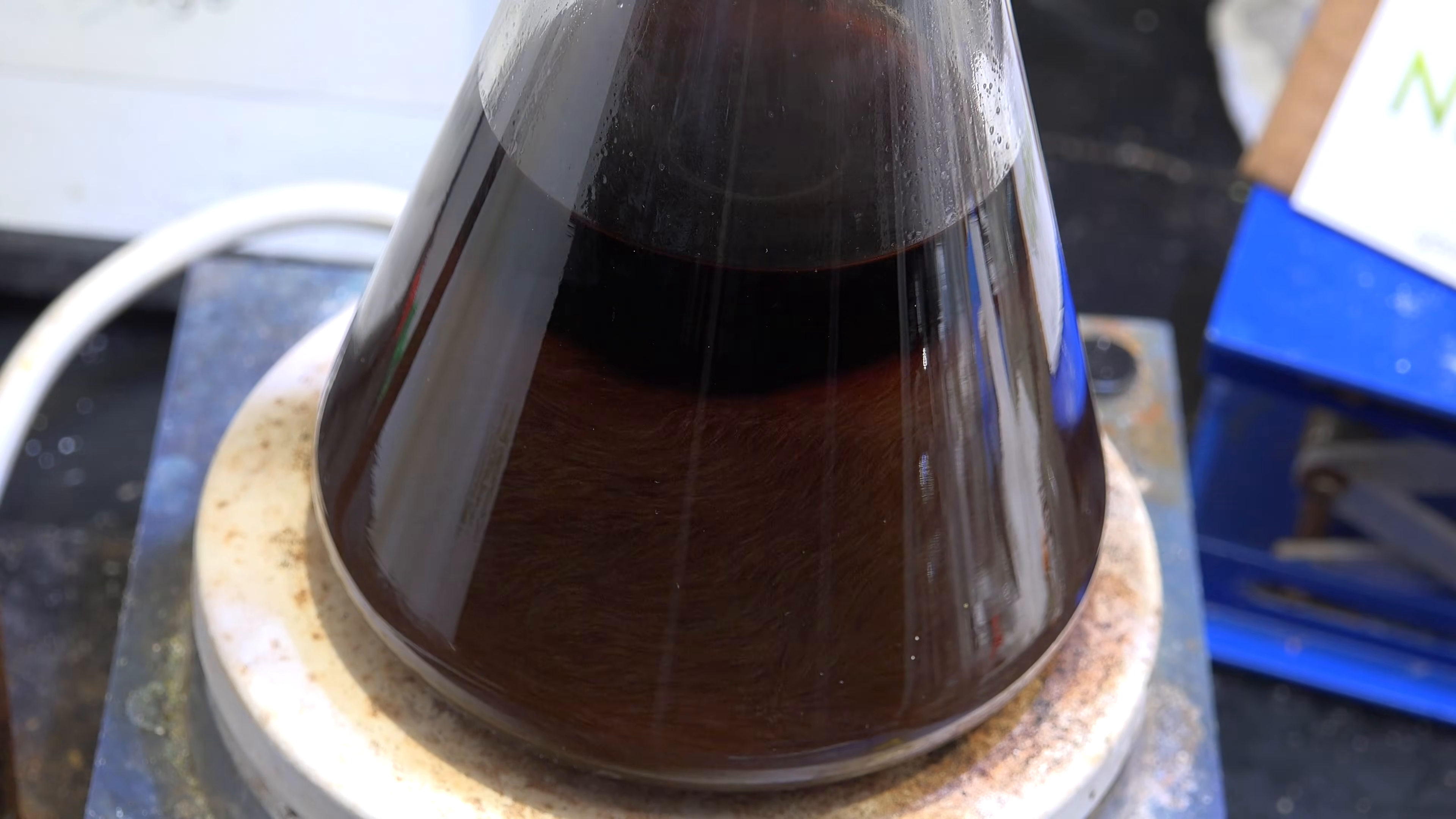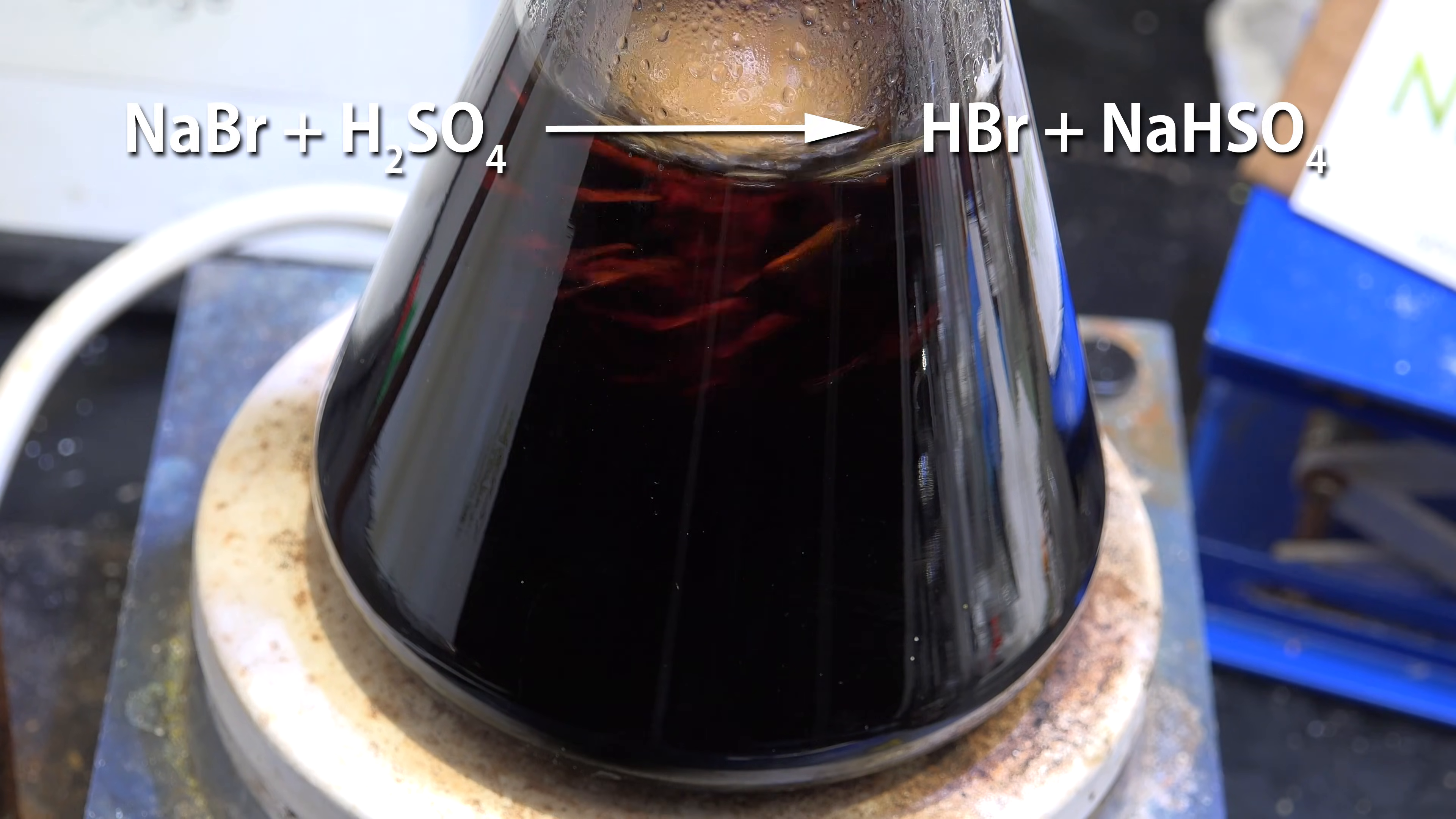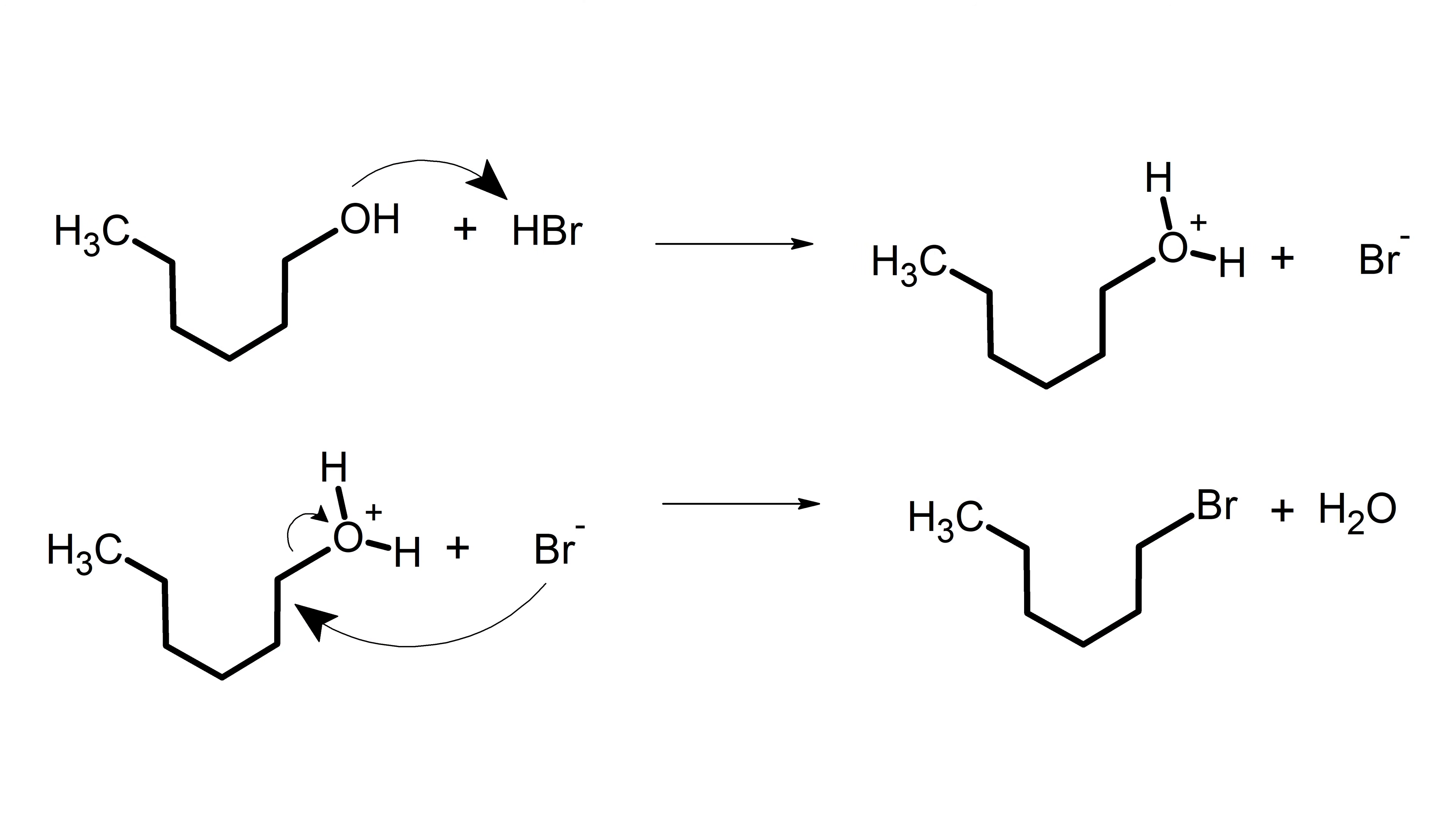With the cooling water turned on we turn on heating and stirring and gently reflux the mixture for 6 hours. What's happening is first the sodium bromide reacts with the sulfuric acid to produce hydrobromic acid and sodium bisulfate. Then the mechanism proceeds similarly to bromoethane. The alcohol group in the hexanol is protonated by the acidic conditions and bromide comes in and attacks the carbon, forming water and bromohexane.